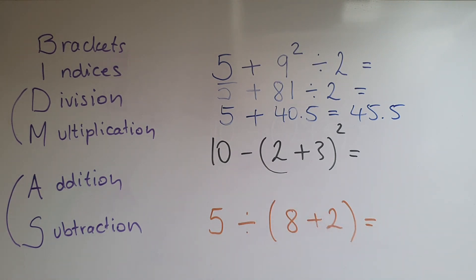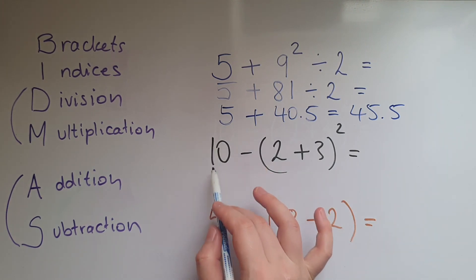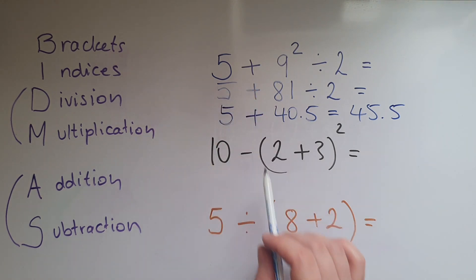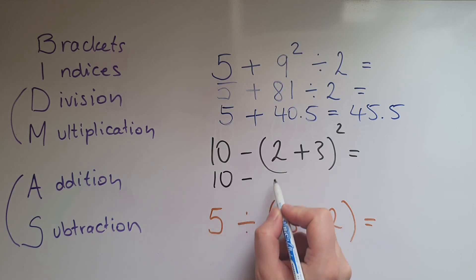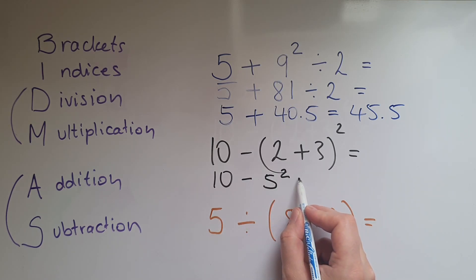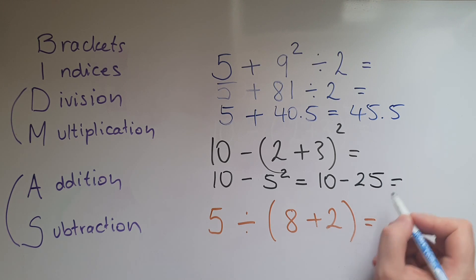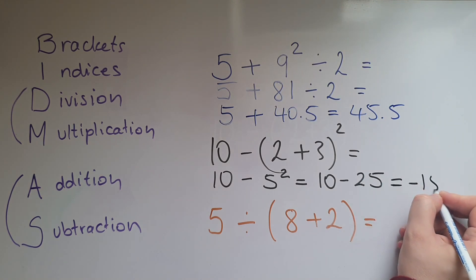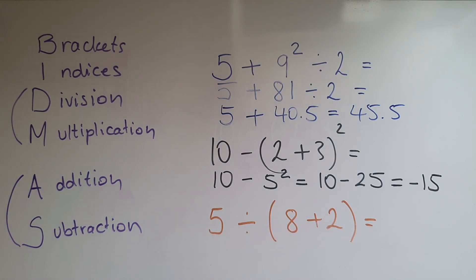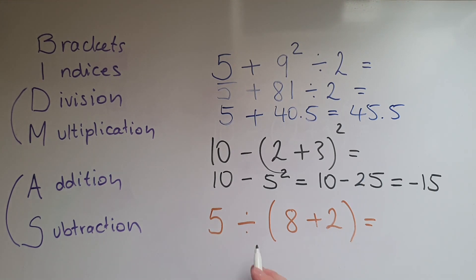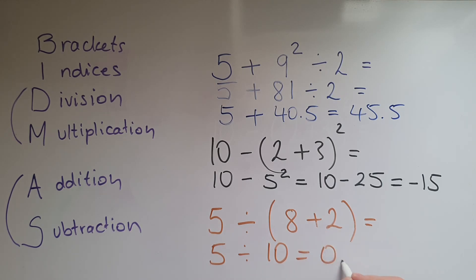Looking at another example: 10 take away (2 plus 3) all squared. We do brackets first: 2 plus 3 is 5. That gives 10 take away 5 squared, which is 10 take away 25, giving us negative 15. Finally, 5 divided by (8 plus 2): brackets first gives 5 divided by 10, which is 0.5.